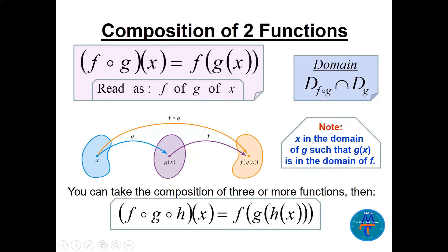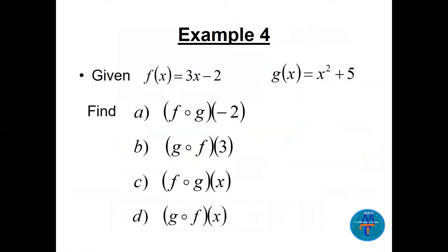We can also have composition of three or more functions: (f∘g∘h)(x) = f(g(h(x))). We start with h(x), then apply g to that result, then apply f. Example 4 has four parts — all relatively straightforward.